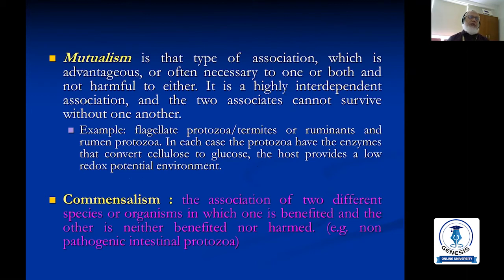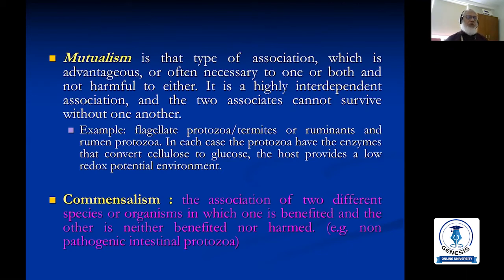Mutualism is the type of association which is advantageous or often necessary to one or both parties and not harmful to either. It is a highly interdependent association and the two associates cannot survive without one another. Examples are some flagellate protozoa with termites, or ruminants and rumen protozoa.